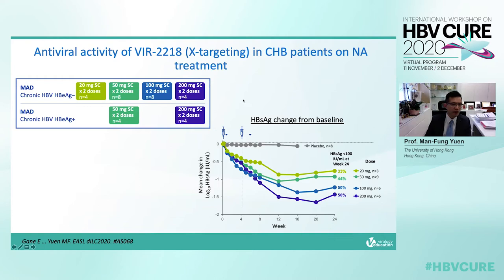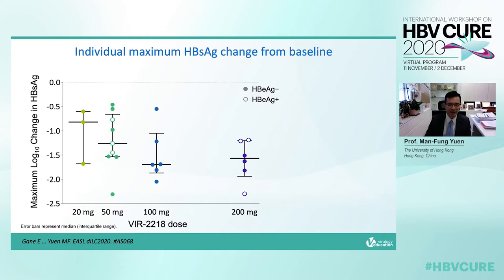VR2218 singly targets the X open reading frame. Two monthly injections with increasing dose resulted in a dose-proportional surface antigen reduction. The surface antigen reductive effects still continued until 12 to 16 weeks after the last dose. For example, the highest mean reduction of surface antigen of more than 1.5 log was achieved in patients receiving 200 mg at 16 weeks after the last dose. Individual scatter plots demonstrate clearly the dose relationship with maximal surface antigen suppression, with similar reductions achieved in HBeAg-negative and HBeAg-positive patients.